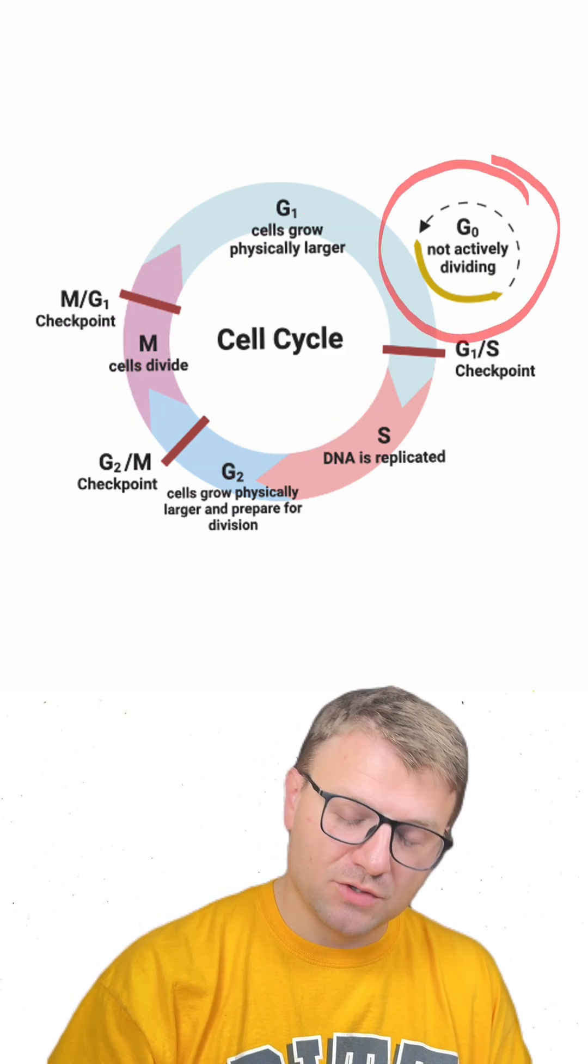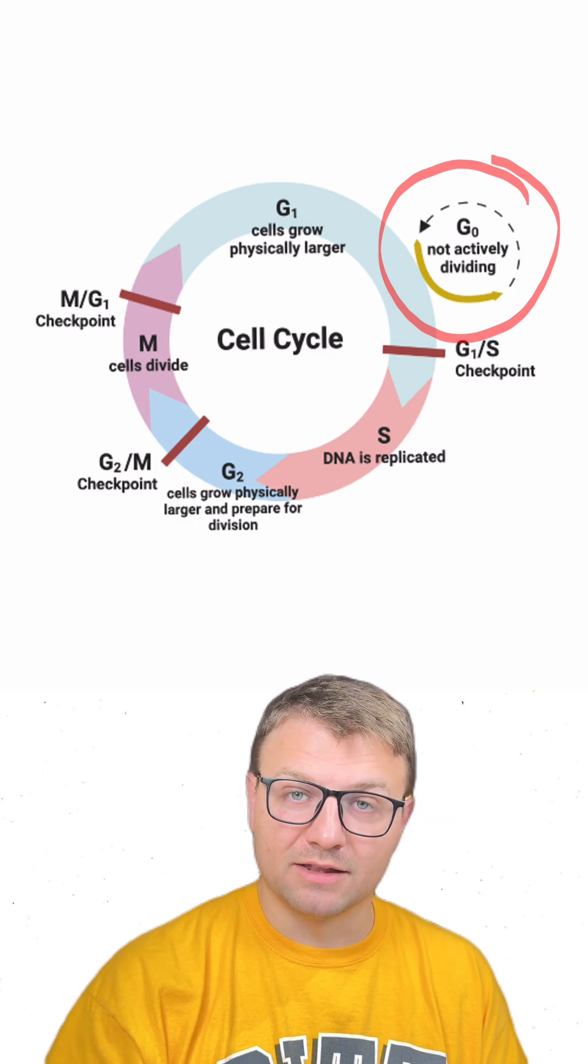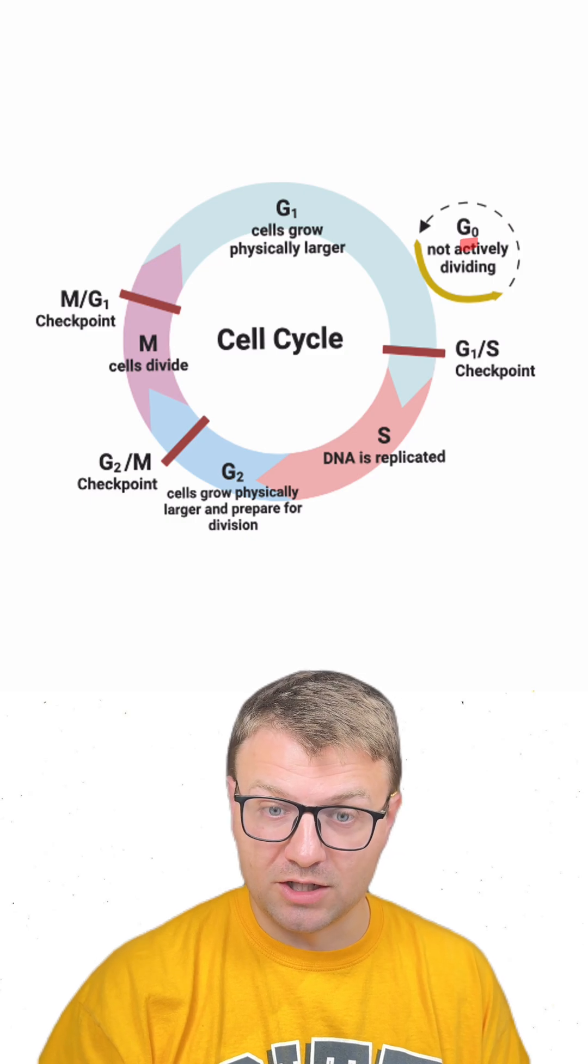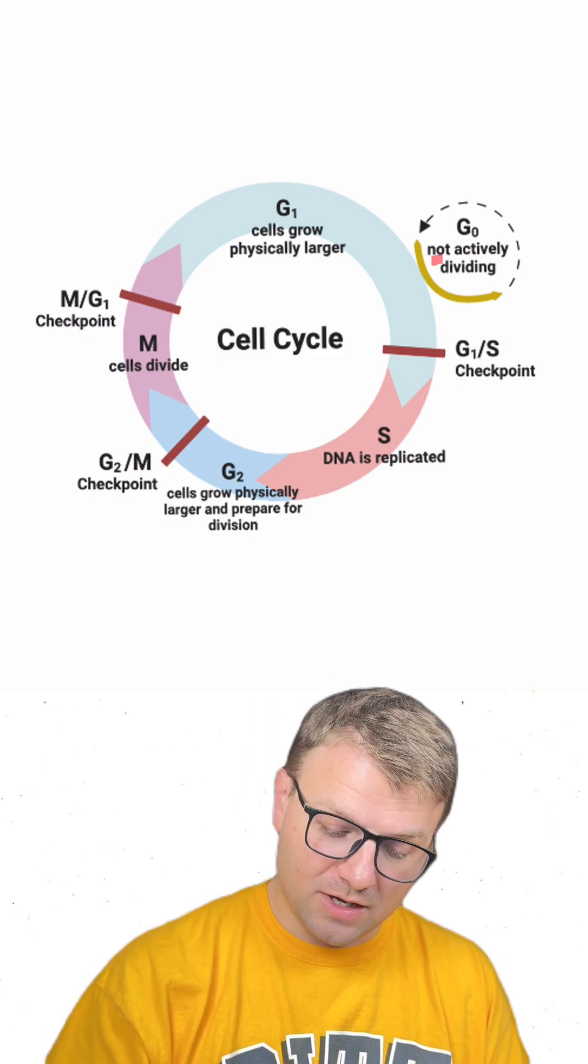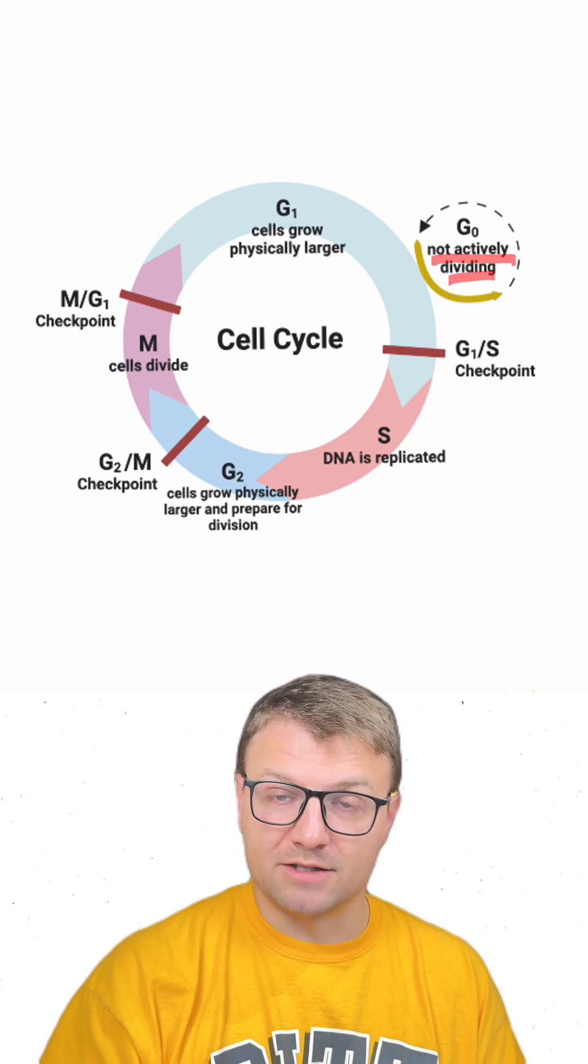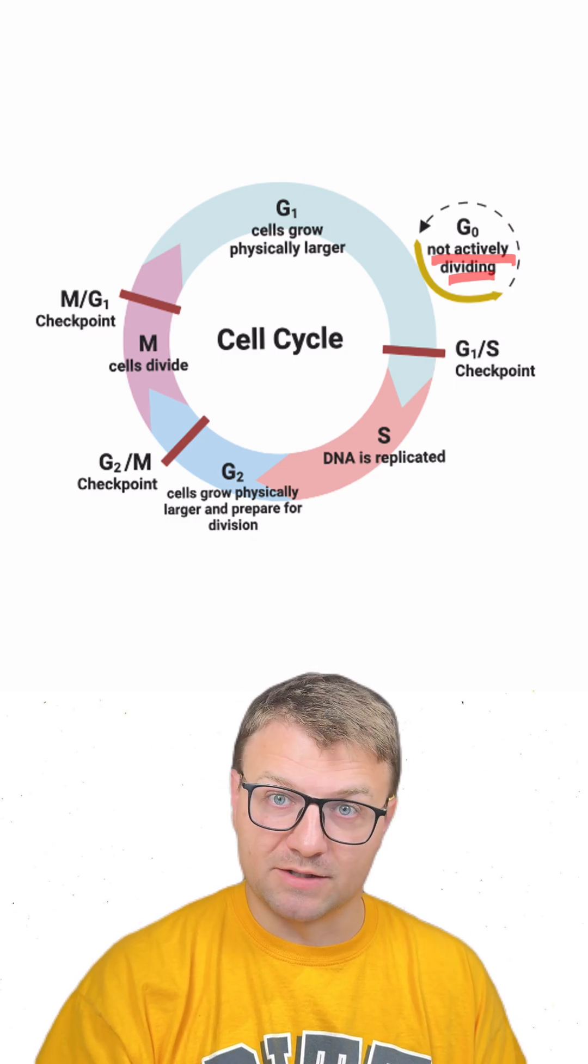Now some cells will enter G1 phase and not leave. These phases are in something called G naught or G0 phase. This is when cells don't actively divide and will just stay in this G1 phase basically until the organism dies.